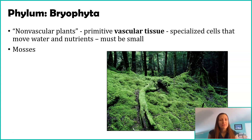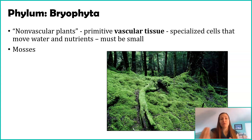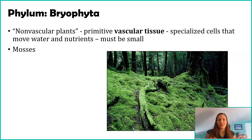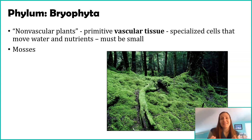Although bryophytes don't have true vascular tissue, they do have a primitive type of vascular tissue. Their cells have pores, and water can move from one cell to another — but it's a very slow and inefficient system. This limits the size that organisms in phylum Bryophyta can reach, because they don't have a quick way of moving water through the plant.